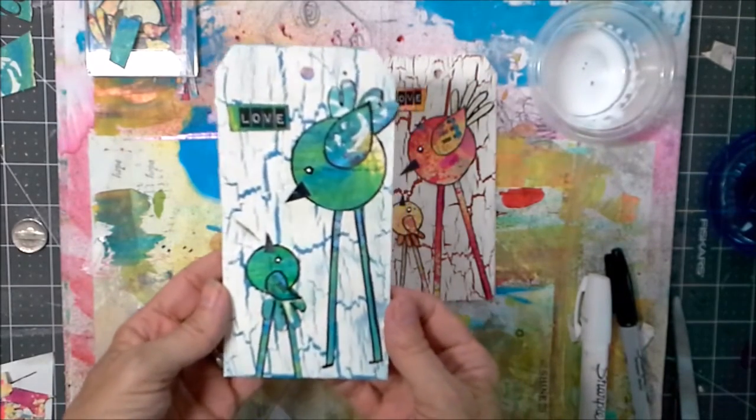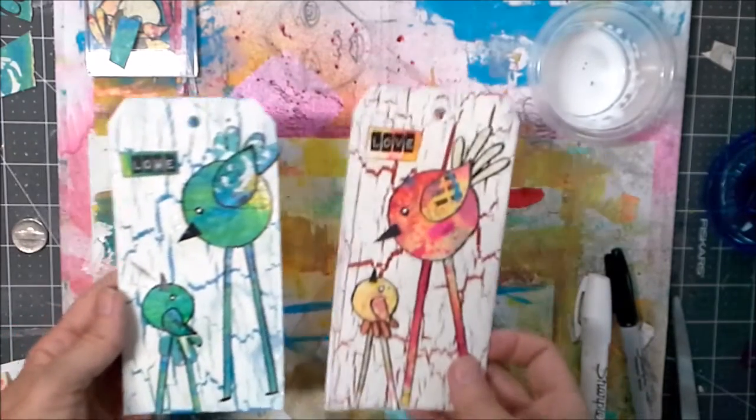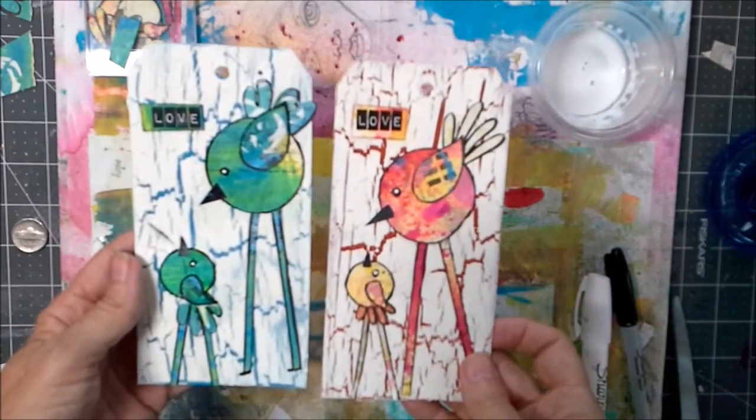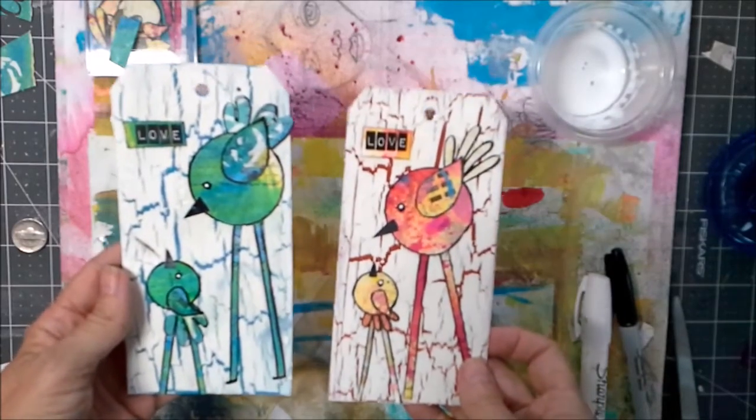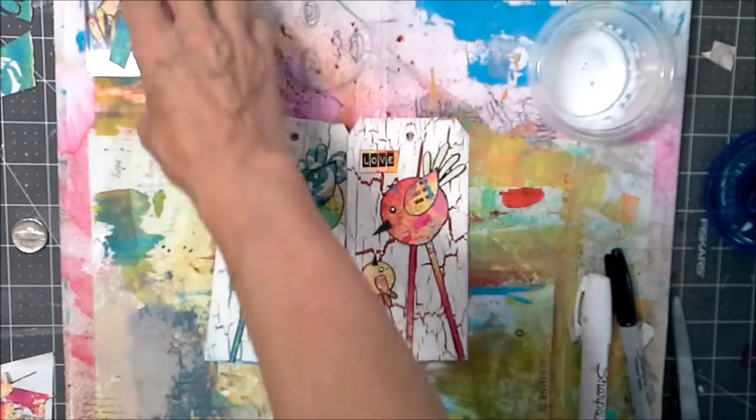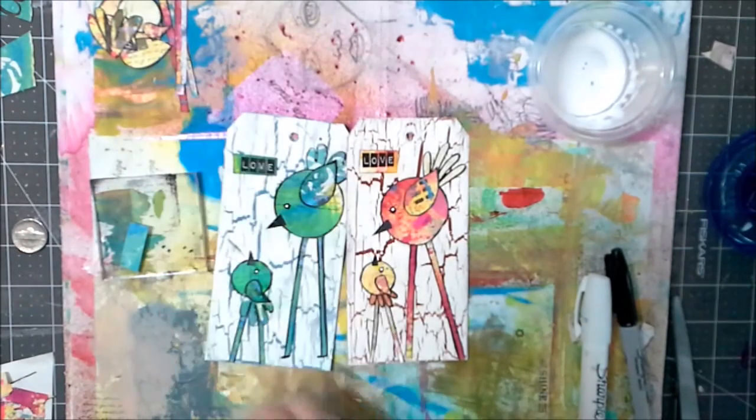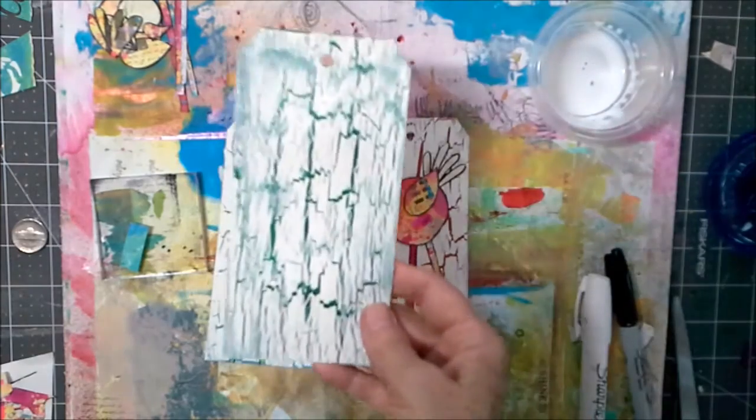So don't let not being able to draw discourage you. Just remember to use simple shapes and you can always construct off of the piece which is the way that I do things. Up here I've got a whole nother little bird to put on my crackle background right here.